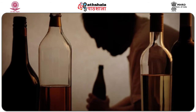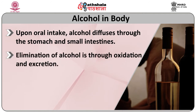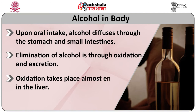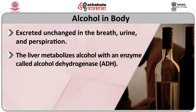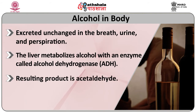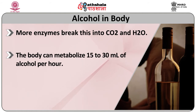Upon oral intake, alcohol diffuses through the stomach and small intestine. Elimination of alcohol occurs through oxidation and excretion — oxidation takes place almost entirely in the liver, while excretion occurs unchanged in the breath, urine, and through perspiration. The liver metabolizes alcohol with an enzyme called alcohol dehydrogenase (ADH), producing acetaldehyde, which is further broken down into carbon dioxide and water. The body can metabolize approximately 15 to 30 ml of alcohol per hour.